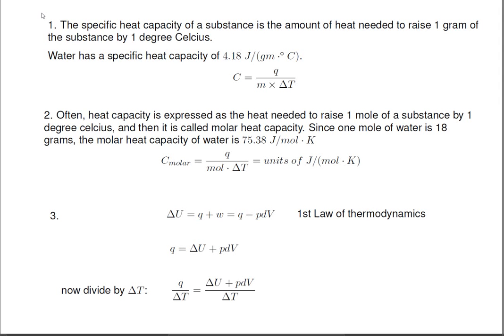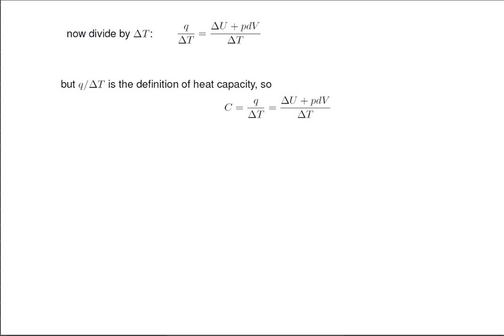Now divide by delta T, and we get Q over delta T is delta U plus PDV over delta T. But Q over delta T is the definition of heat capacity. So heat capacity is Q over delta T, which equals delta U plus PDV over delta T.